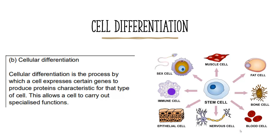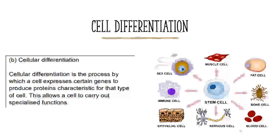First, what do we mean by differentiation? This is the process by which cells come to be specialized — from the generic stem cells to any one of the specialized cells that make up the human body: things like muscle cells, immune cells, nervous cells, blood cells, etc.